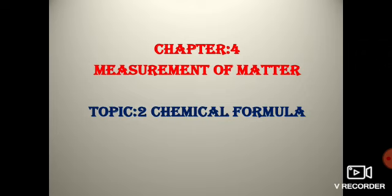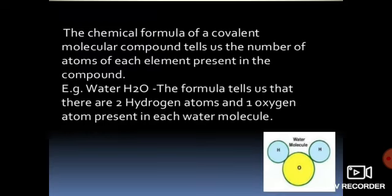By just looking at the formula, we know how many elements are present. There is one calcium because Ca appears once, and two chlorines because the formula is CaCl2. So the chemical formula is a convenient way of expressing compounds made up of elements.